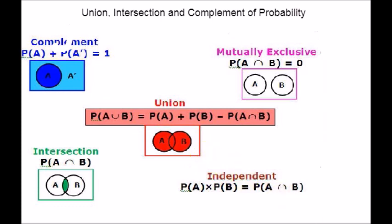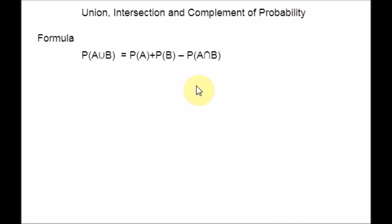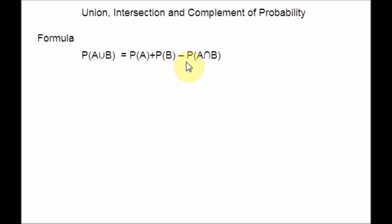Let us start with the formula for the union of probability. Suppose A and B are two events associated with a random experiment. Then the union of A and B is represented by the union symbol. The probability of the union of two events is given by: P(A ∪ B) = P(A) + P(B) − P(A ∩ B). This symbol is called intersection. Here, P(A) is the probability of event A and P(B) is the probability of event B.